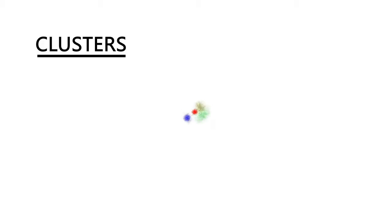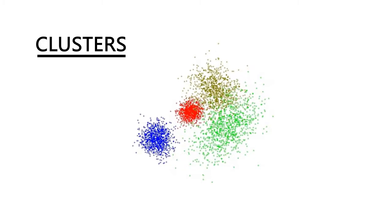Under the hood of our activity detection software are two novel techniques. The first is an automatic clustering algorithm that works on high-dimensional data. It determines how many clusters there are in the data and then determines a maximum likelihood model for each of those clusters.